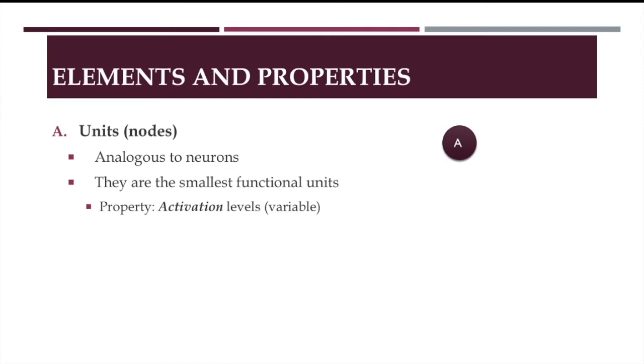The central element, just like we have the neuron in nervous systems, are called the units. They are also called nodes, or neurons, because their role is analogous to that of neurons. Of course, these neurons abstract away from many of the features of real biological cells. But they are the smallest functional unit, and their central property is that they hold activation levels, which are basically numerical values which can vary through time.